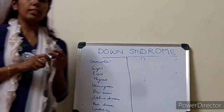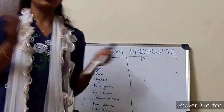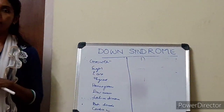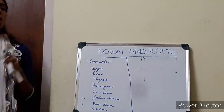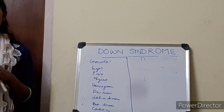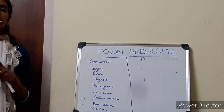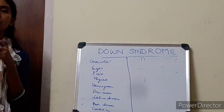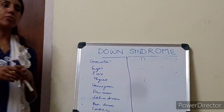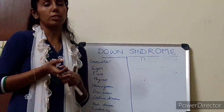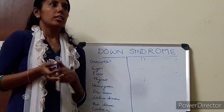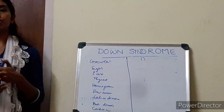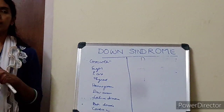Mortality in case of Down syndrome is mostly secondary to congenital heart disease or leukemias. They tend to have a slightly lower risk of death due to ischemic heart disease or solid tumors. The average life expectancy is around 50 to 55 years.